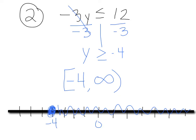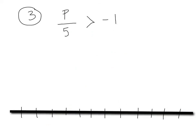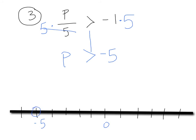When you divide or multiply by a negative number, you have to flip the sign. Next: p over 5 is greater than negative 1. To move that 5, we multiply both sides by 5. Ask yourself: are we multiplying by a positive or a negative? We're multiplying by a positive, so we don't flip. P is greater than negative 5. On the number line, put 0 and negative 5; because it does not equal negative 5, use an open dot. Numbers greater than negative 5 are to the right, so shade right. Interval notation: start at negative 5, go to positive infinity, parentheses on both.